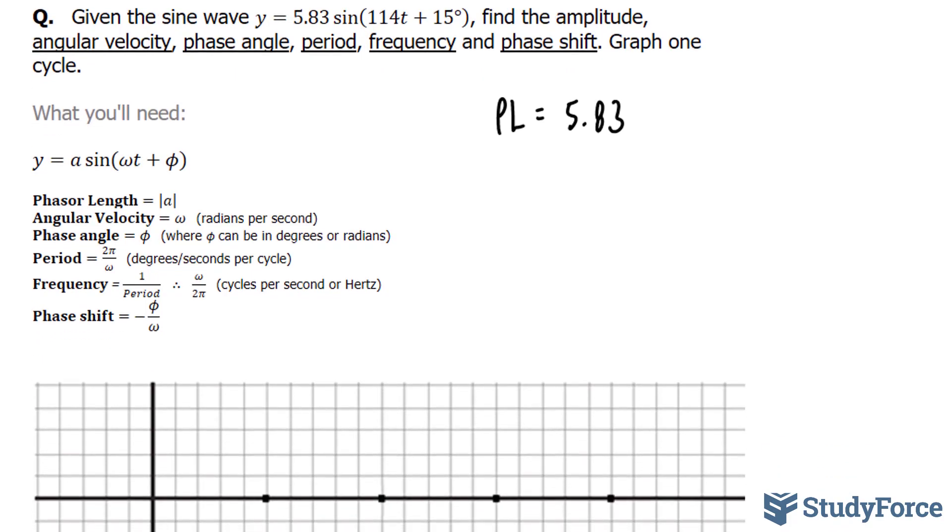Next, the angular velocity is represented by this Greek letter omega. And in our case, it's 114. It has to be in radians per second. So omega is equal to 114 radians per second.